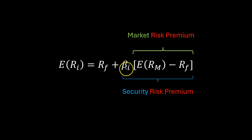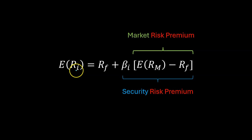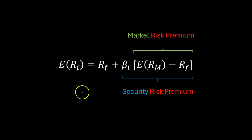All else equal, the higher the beta, the more risky the stock, and hence the higher the rate of return that we expect or require from investing in that stock. So with that, let's solve a few problems using the Capital Asset Pricing Model.